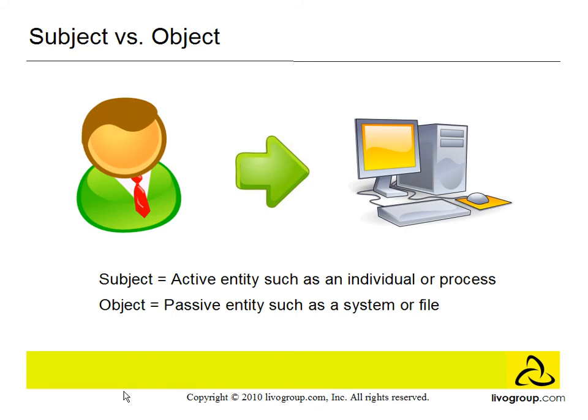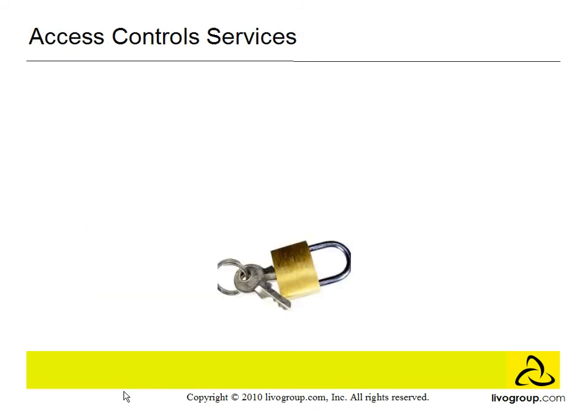Access Control systems provide three essential services: authentication, authorization, and accountability.